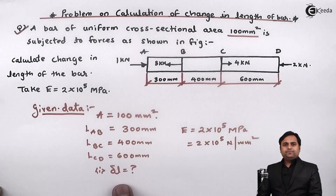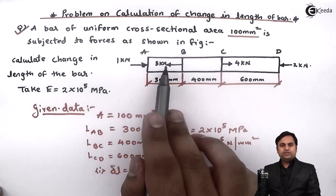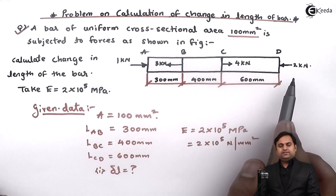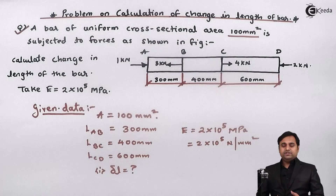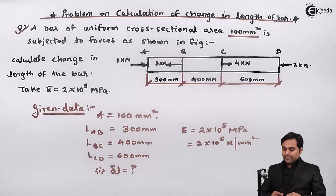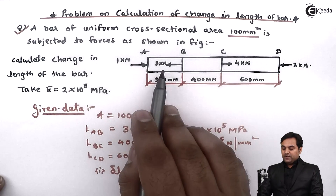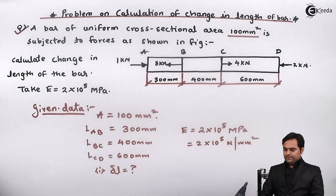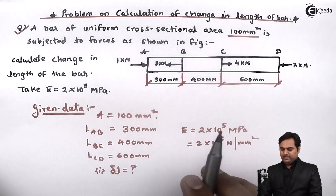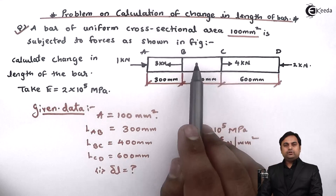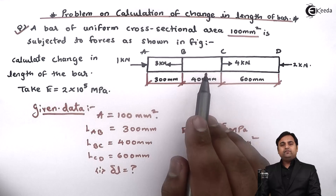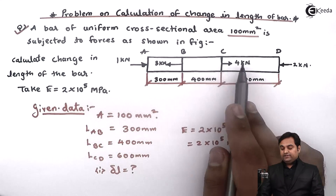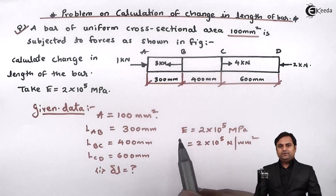To find the total change in length, we find the individual change in length in portions AB, BC, and CD, then add them together. One important point: for the middle portion of the bar, which is BC, the deflection is calculated last. We first calculate deflection of AB, then CD, and finally BC.